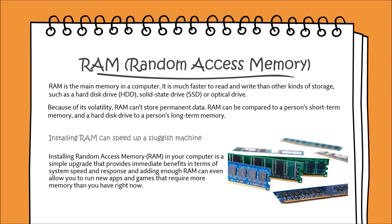The characteristics of Static RAM are: long life, no need to refresh, faster, larger in size, high power consumption, and more expensive compared to Dynamic RAM. In Dynamic RAM, the memory must be continuously refreshed to maintain data. This is done by placing the memory on a refresh circuit that rewrites the data several hundred times per second. DRAM is used for most system memory as it is cheap and small. All DRAMs are made up of memory cells composed of one capacitor and one transistor.